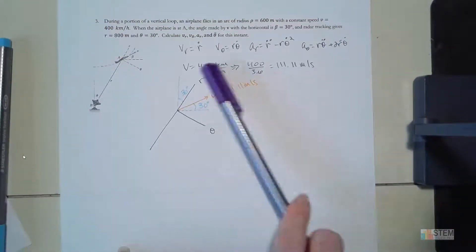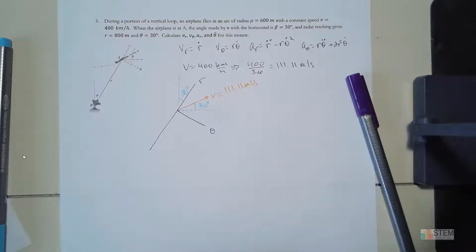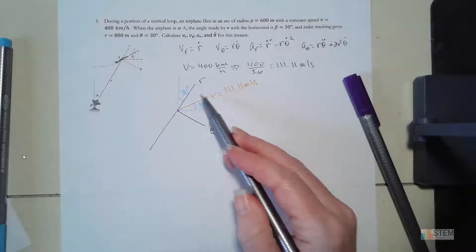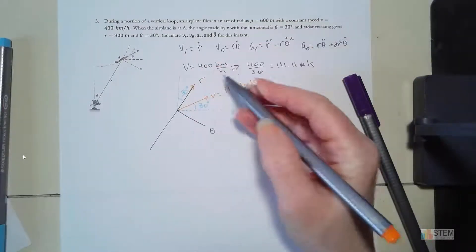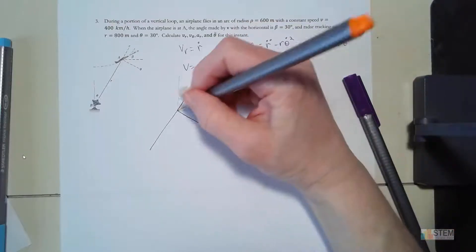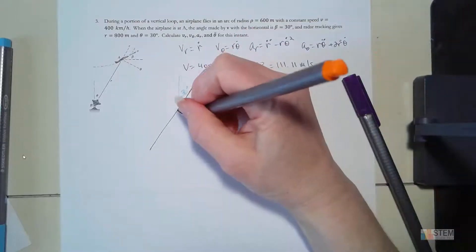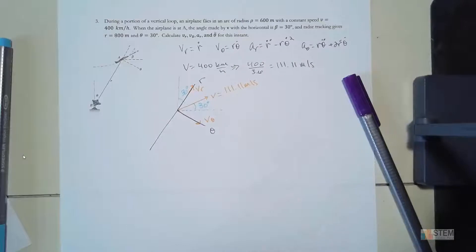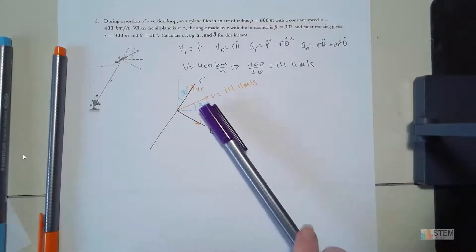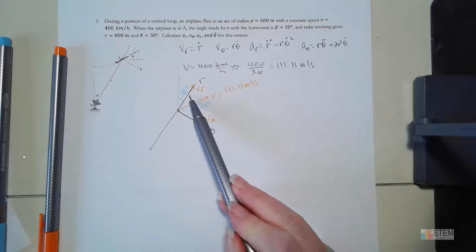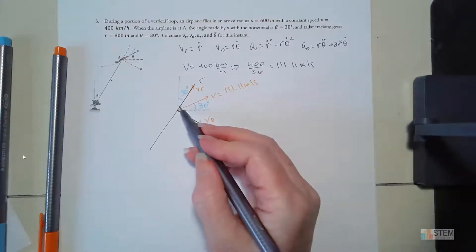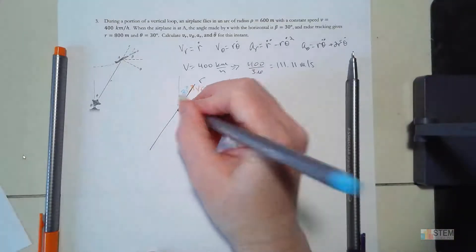This is similar to statics where you resolve a force into x and y components — same concept here, except we're splitting the velocity into r and θ components. So vr is the r-axis component and vθ is the θ-axis component. To do that, we need the angle between the velocity vector and the r-θ system. Since the r and θ axes are perpendicular, and the angles must sum to 90 degrees, that remaining angle is 30 degrees.